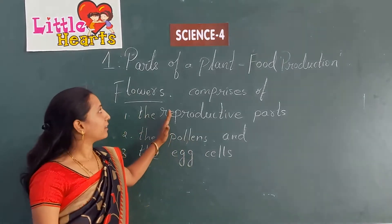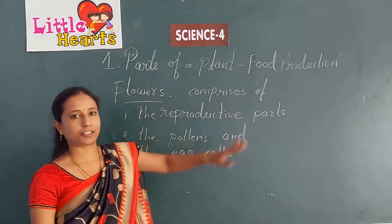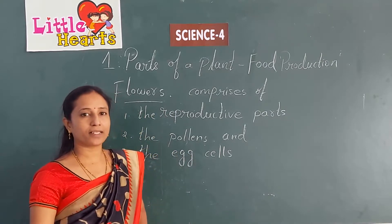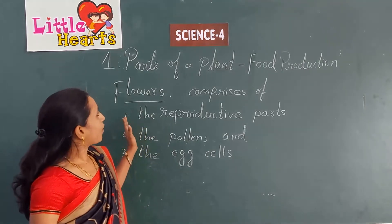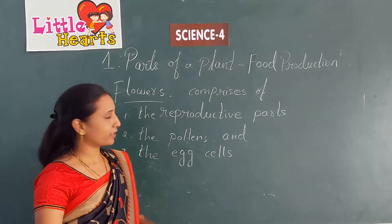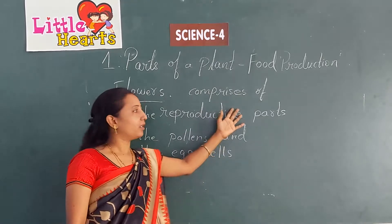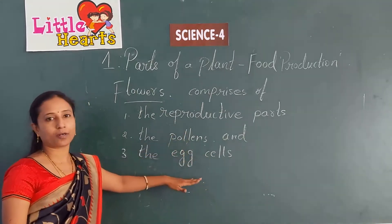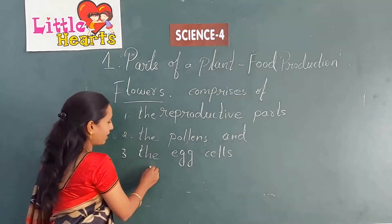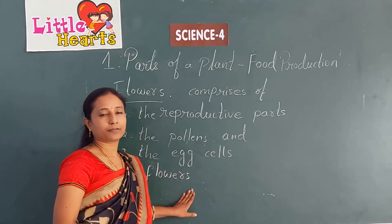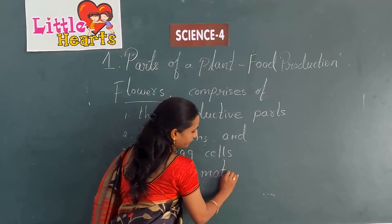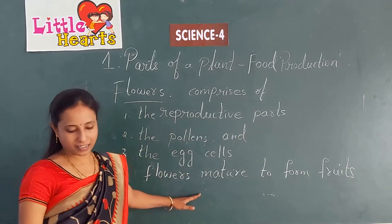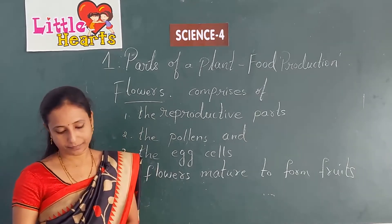This is the continuation of Class 4 Science: Parts of the Plant — Food Production. In the last class we discussed the functions of roots and the functions of stems. In today's topic we are going to discuss parts of a plant: flowers. Flowers comprise the following parts: the reproductive parts, the pollens, and the egg cells. When flowers mature, they form into fruits.